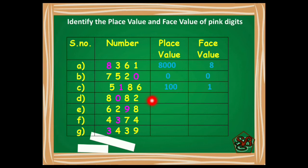Oh, again a 0. So we don't have to think much. It will be 0 and 0. Moving on to the next number.